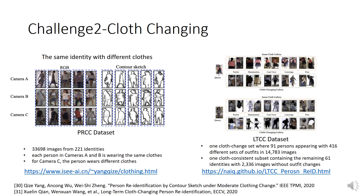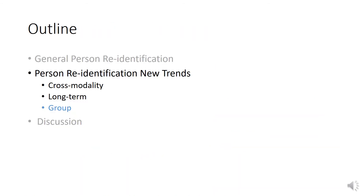Long-term re-ID can also lead to a more challenging situation: clothes changing. Two papers started to focus on this direction. The TPAMI 2020 paper raised the PRCC dataset, consisting of 33,000 images from more than 200 identities. The ECCV 2020 paper constructed the LTCC dataset, containing 91 persons with different clothes. Not many works investigate this direction. Future works may consider how to recognize a person while ignoring appearance and incorporating more useful information such as time and space.